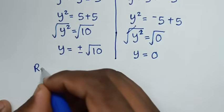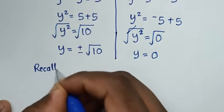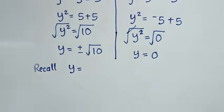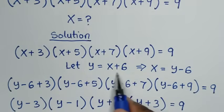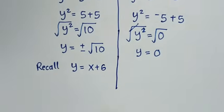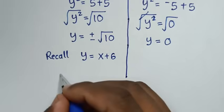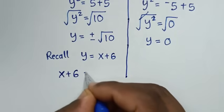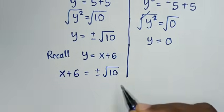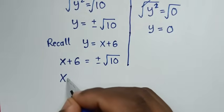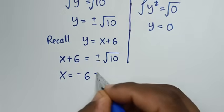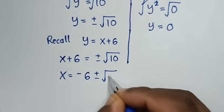Recalling that y = x+6, we substitute back. For y = ±√10: x+6 = ±√10, so x = −6 ± √10.